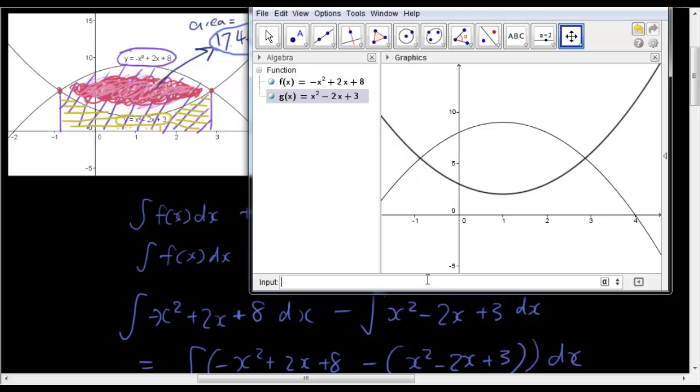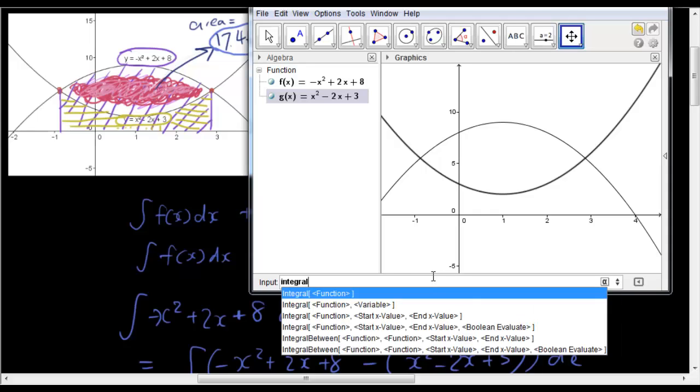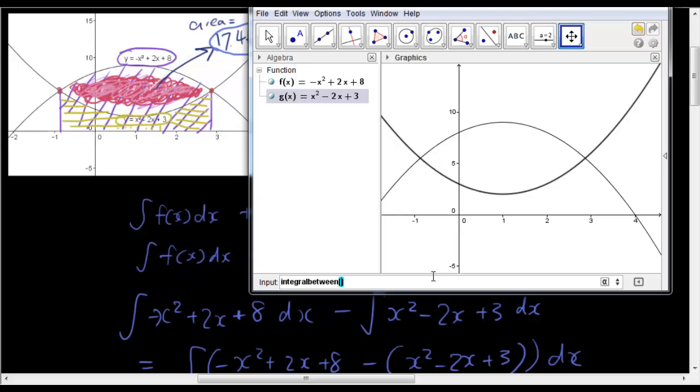And if I find the integral between them, so integral between these two functions, it's negative x squared plus 2x plus 8, comma, x squared minus 2x plus 3, from negative 0.87 to 2.87. And it gives me 17.46. Okay, and now I'm going to move these two graphs a bit further below so that the area cuts the x-axis. So I'm going to draw my first curve. I'm going to change the y-intercept from plus 8 to, let's say, plus 3.